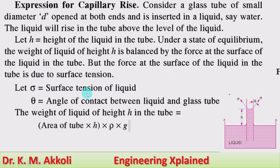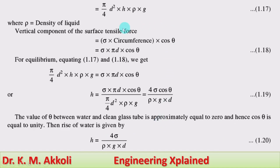Let sigma equal to surface tension of the liquid and theta equal to angle of contact between liquid and glass tube. The weight of the liquid of height h in the tube equals the area of the tube multiplied by the height — giving the volume — multiplied by the specific weight, that is rho times g. Substituting the area as pi/4 times d squared, the weight equals (pi/4)d² × h × rho × g, where rho is the density of the liquid.